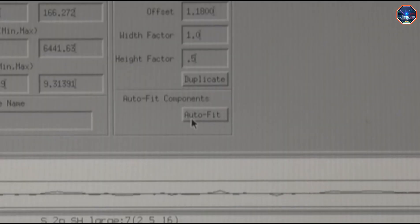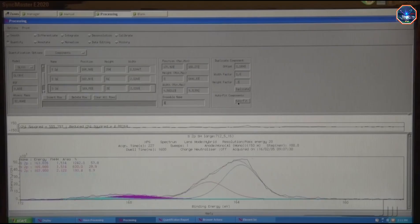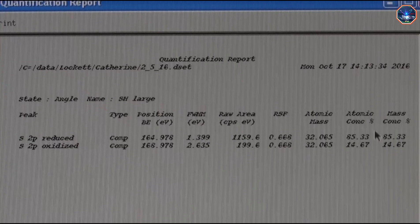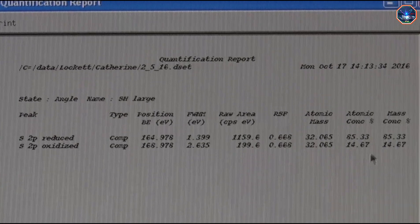Once I've added enough peaks, I can use the auto fit feature to try to obtain the best fit to the data. Finally, I can use this fitted data to determine that 14.6% of my sulfur is in the oxidized form.